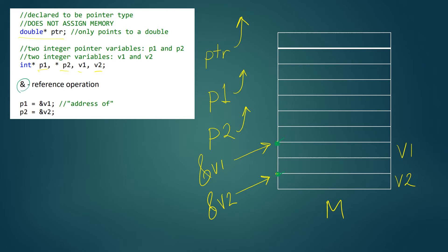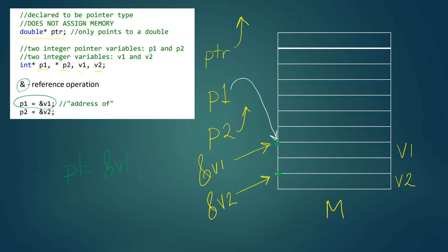Let's now look at this assignment statement. We are taking P1, which is a pointer to an integer, and we are going to point it to V1. Say this is address 100, for example — so the address of V1 is 100. It's like saying P1 equals the address of V1, or the same as saying P1 equals address 100. Keep in mind this is not the right way to do it, because every time you execute a program your variables will be at a different address. So we take P1, and P1 will then point to that same location in memory.